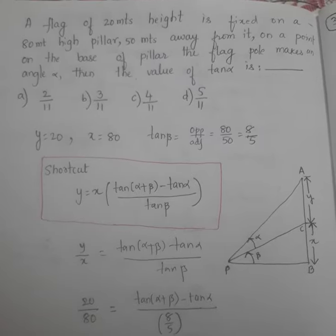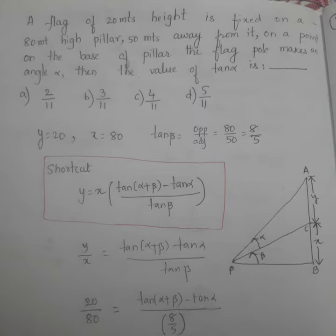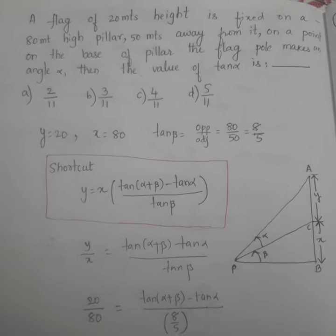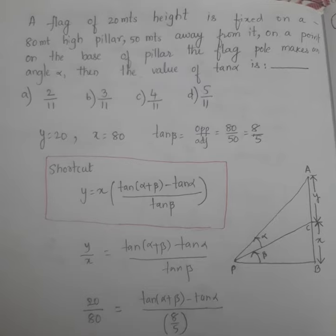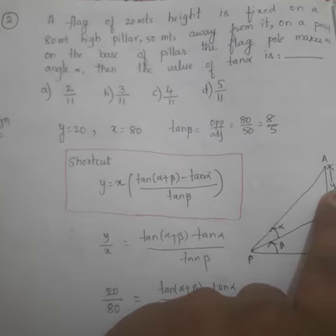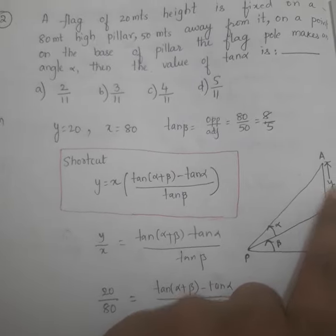Now, just see the question. What the question says is that a flag is there, its height is 20 meters. That flag is fixed on an 80 meter high pillar. Let's suppose X be the pillar and Y be the height of the flag.